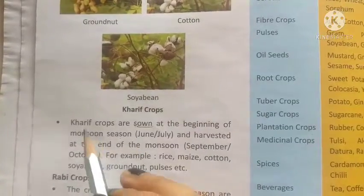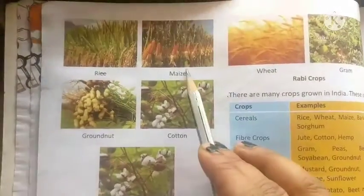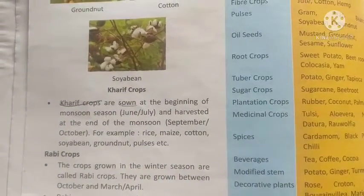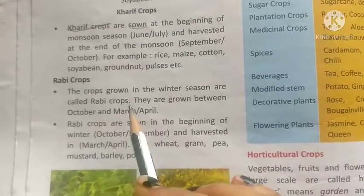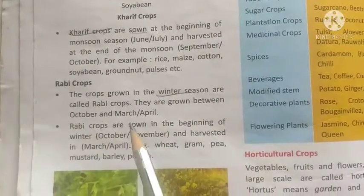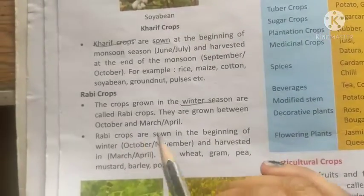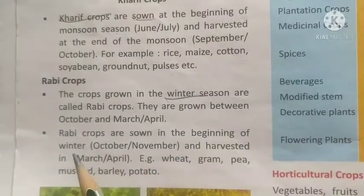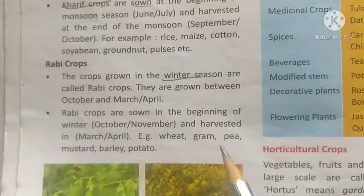Crops grown between June and October are called kharif crops. These include rice, maize, groundnut, cotton, and soybean. The crops grown in the winter season are called rabi crops. They are grown between October and March/April, and harvested in March and April. Examples include wheat, gram, pea, mustard, barley, and potato.